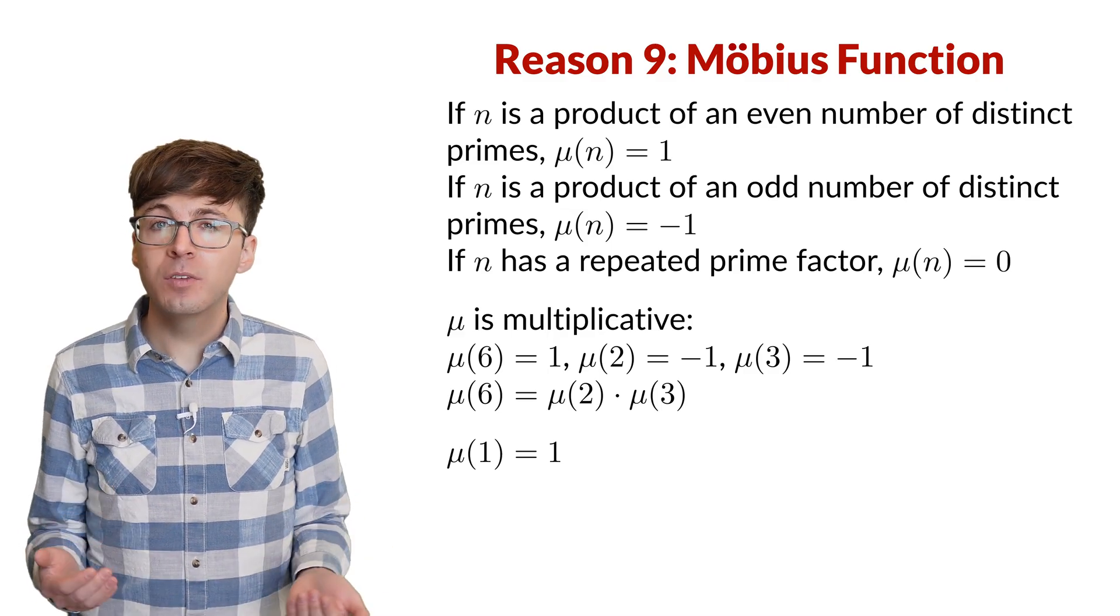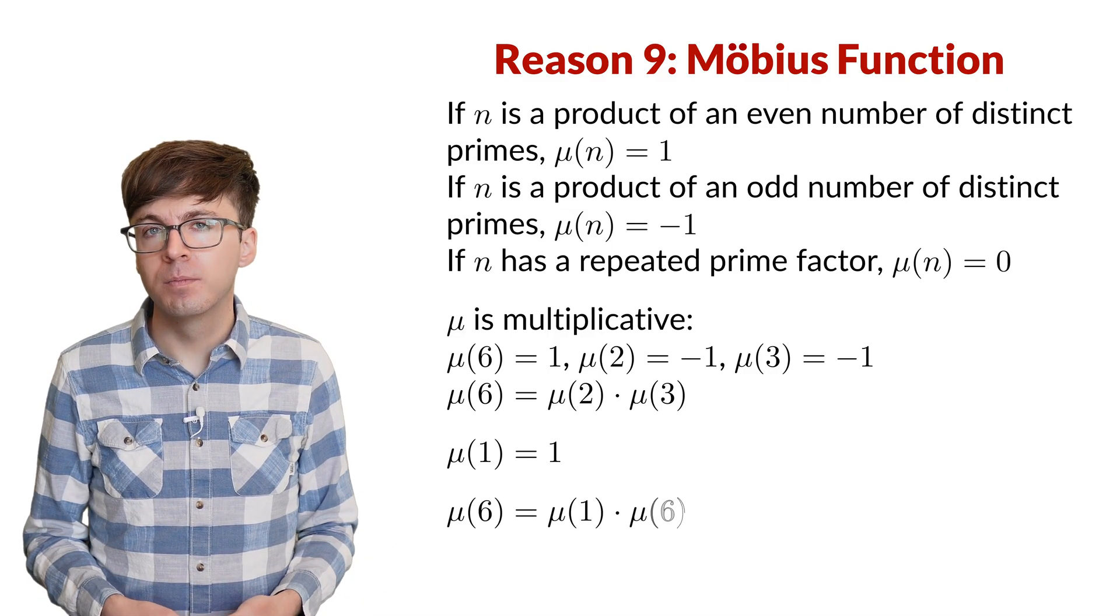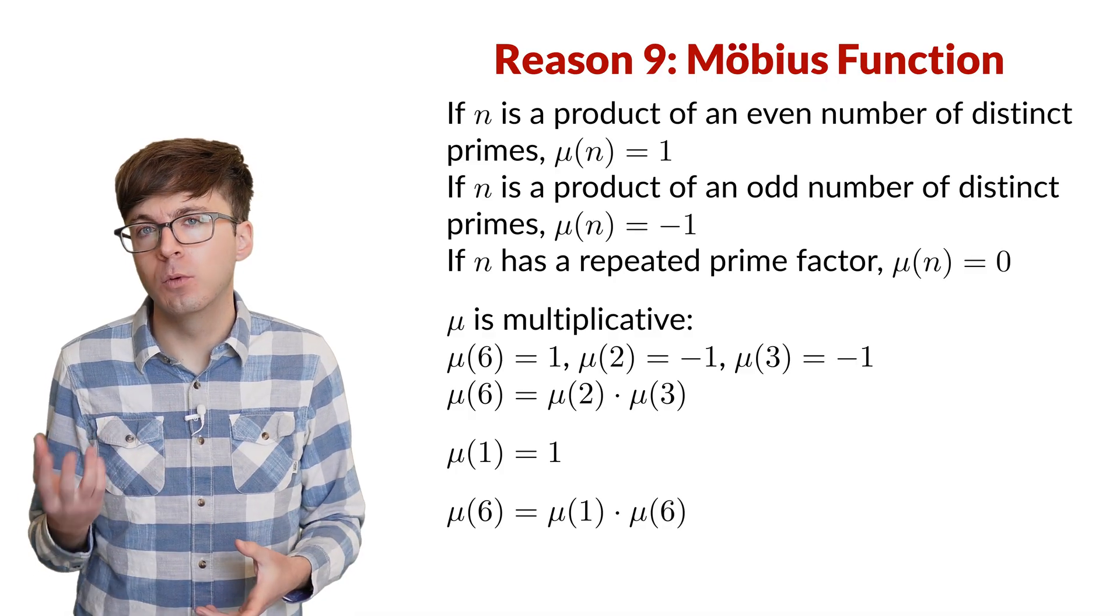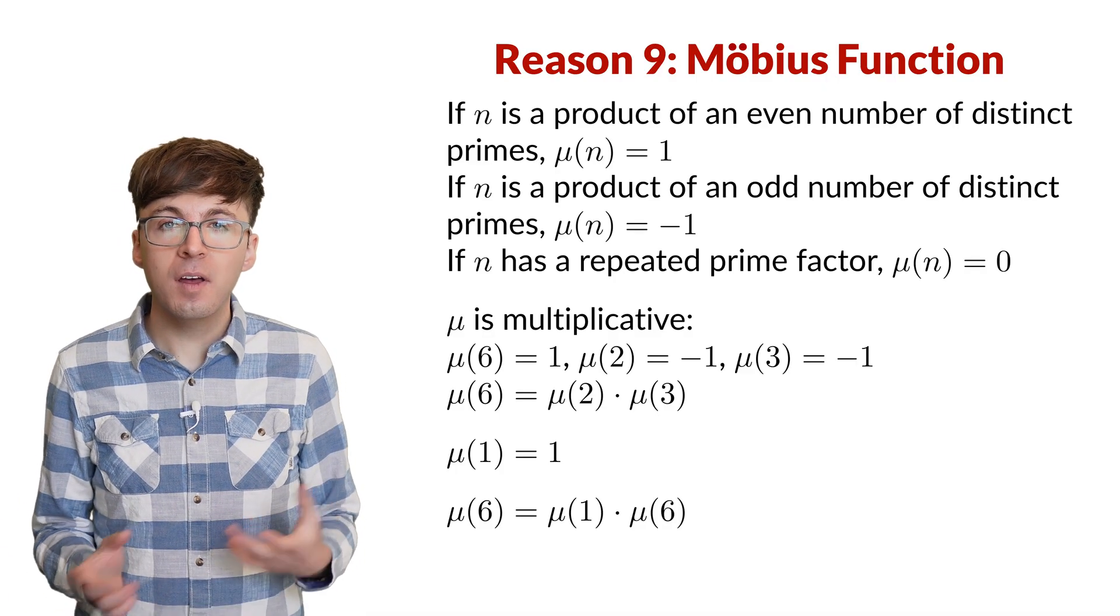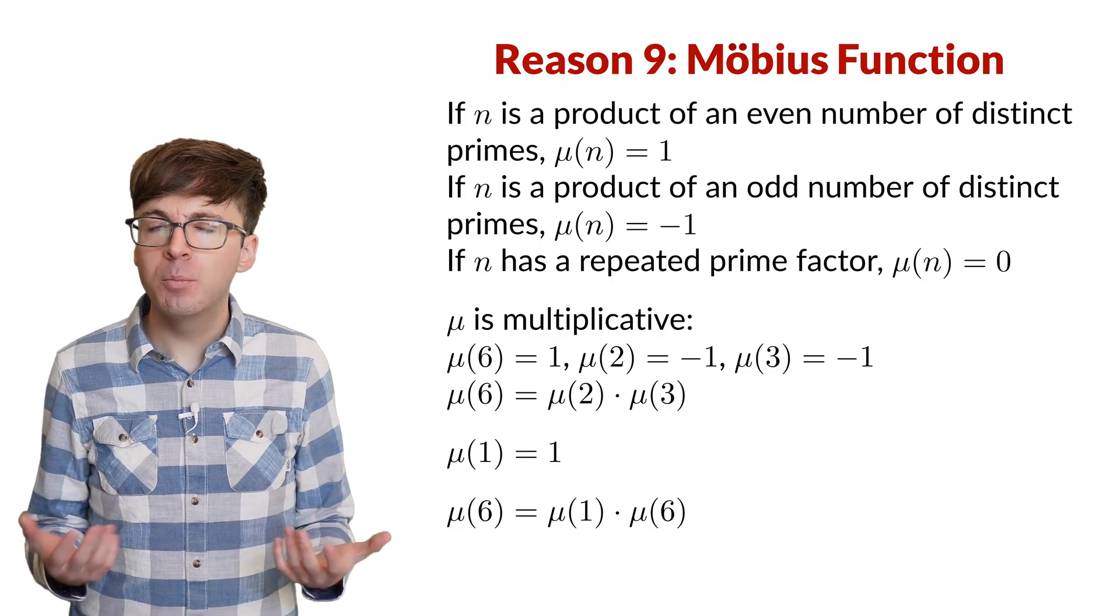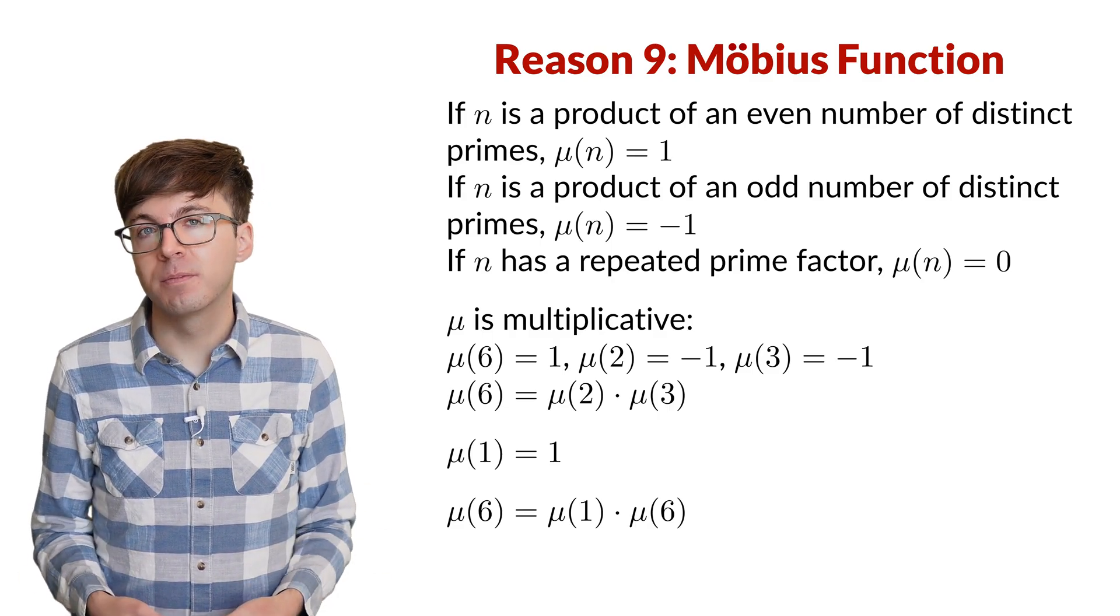If this weren't the case, then the Mobius function would not be multiplicative. Mu of 6 would not equal mu of 1 times mu of 6, for example. Without this multiplicative property, many proofs in number theory would fall apart. Again, 0 should be even.